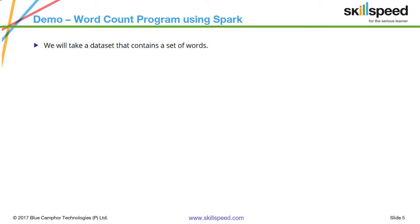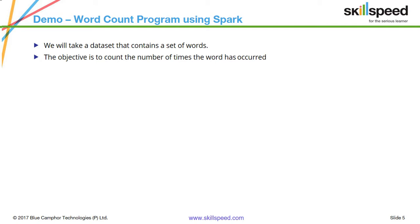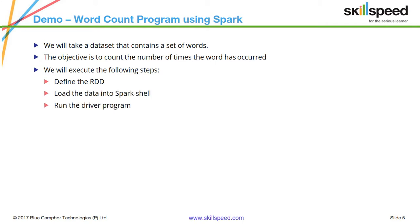Let's demonstrate a word count program. If you're coming from the Hadoop background, this must be a very familiar program. Basically, this program will count the occurrence of words in any given input text file — for example, finding that a particular word repeats three or five times. The objective is to count the number of times each word has occurred. We'll define the RDD, load the data, run the program, and verify the output.